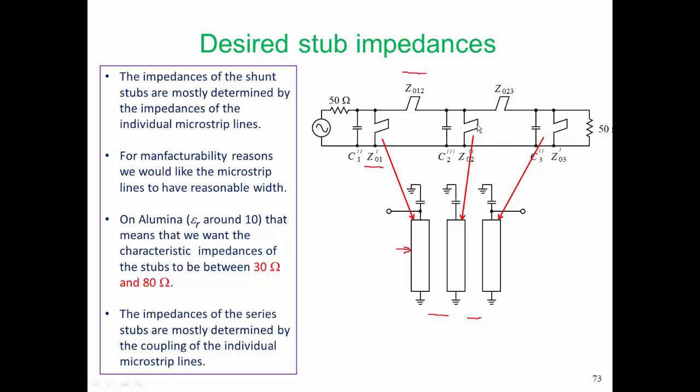The impedances of the series stubs are mostly determined by the coupling of the individual microstrip lines, and so that characteristic impedance is really determined by the separation of those individual microstrip resonators.